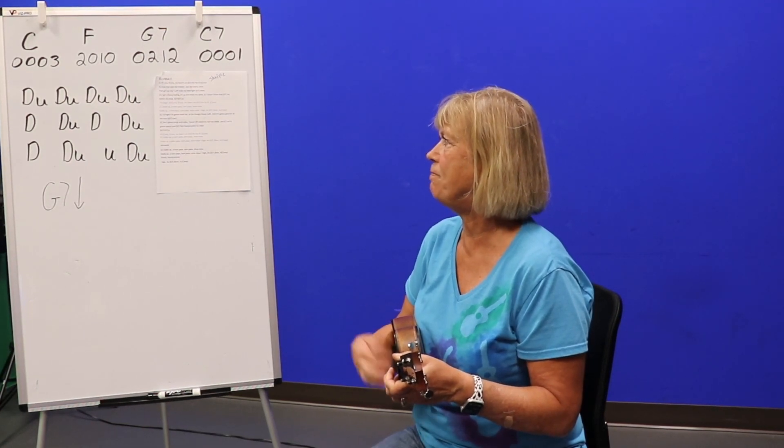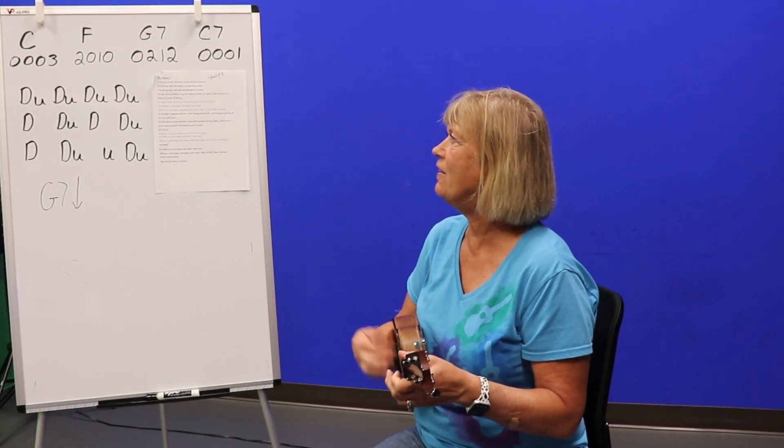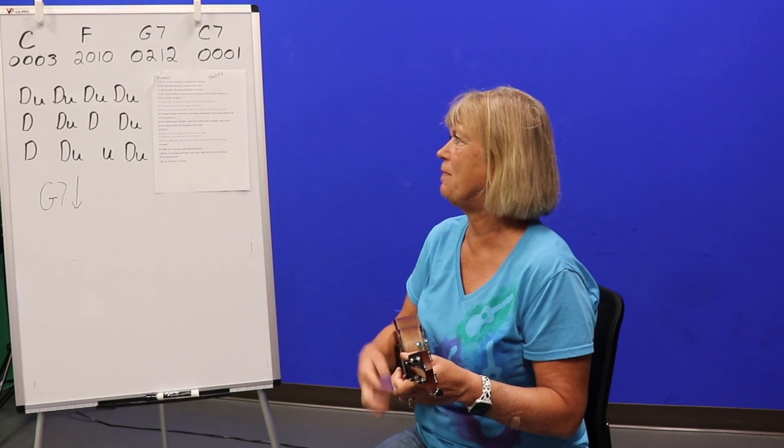Giddy up boom papa boom papa mow mow. Giddy up boom papa boom papa mow mow. Pour silver away. We're gonna skip the acapella and just sing it regular.